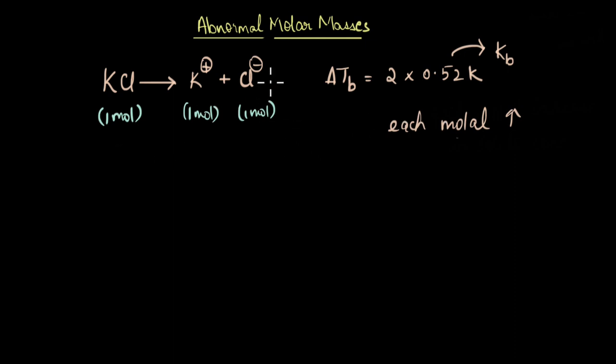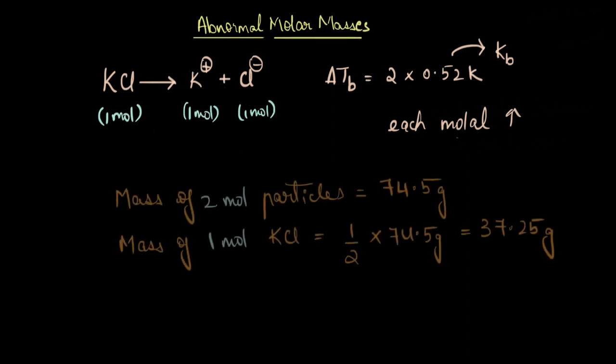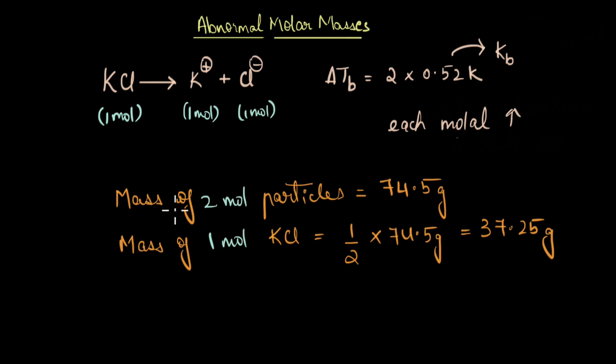The problem here is that if we did not know about the degree of dissociation of KCl, we would calculate its molar mass wrongly. Because the increase in boiling point here corresponds to 2 moles of particles, we would calculate the molar mass of KCl as if it were formed from 2 moles of particles. That is, we would be tempted to conclude that as mass of 2 moles of particles is 74.5 grams, mass of 1 mole of KCl would be 37.25 grams.